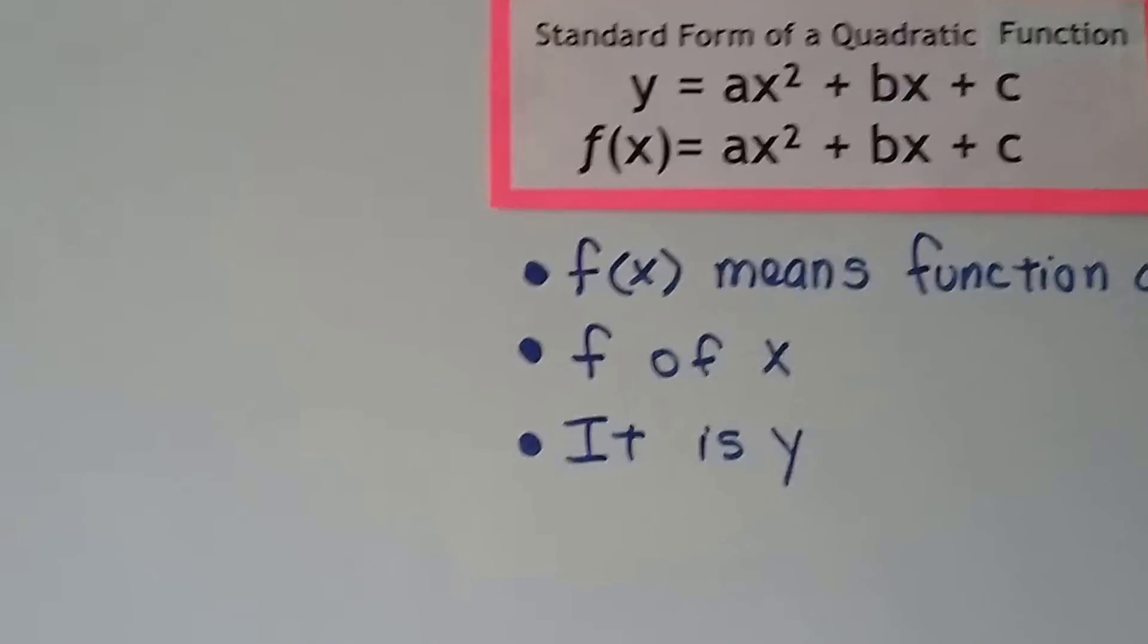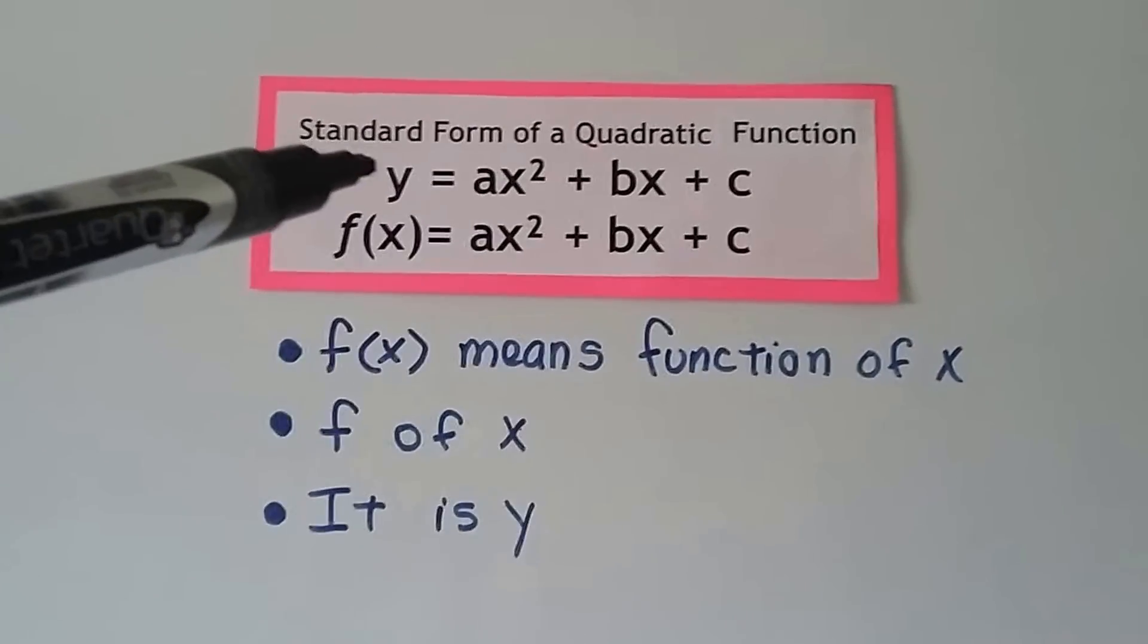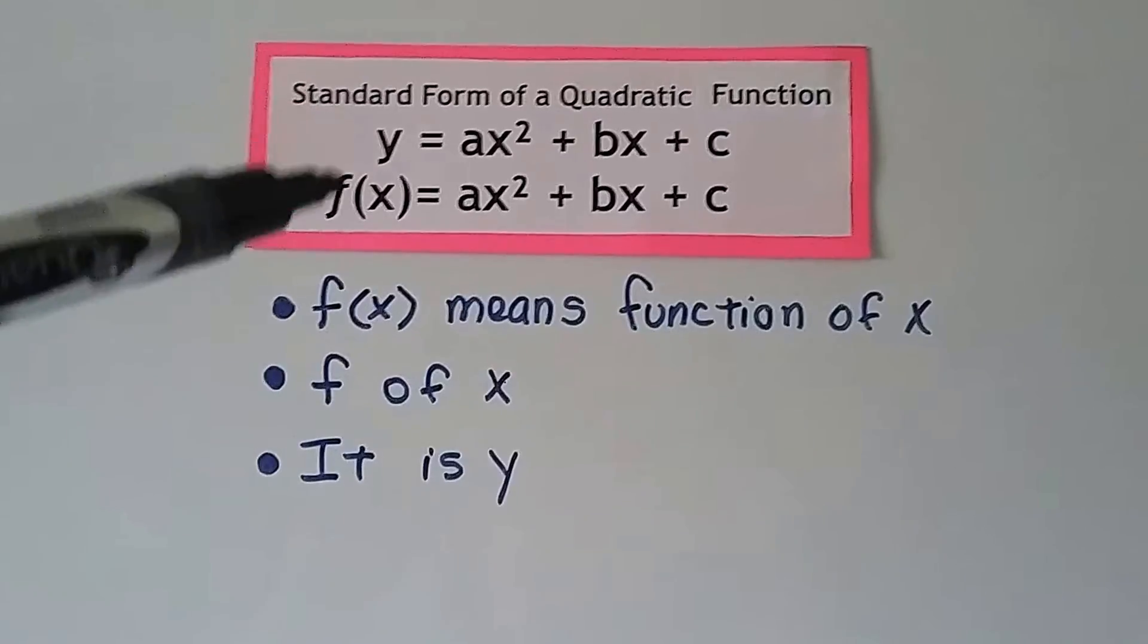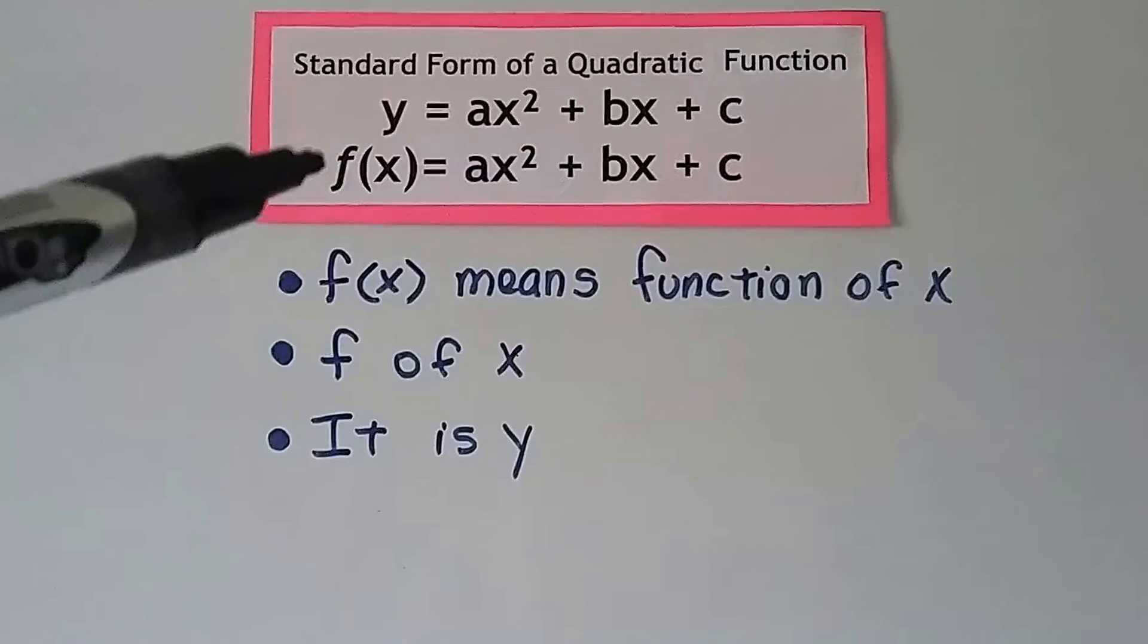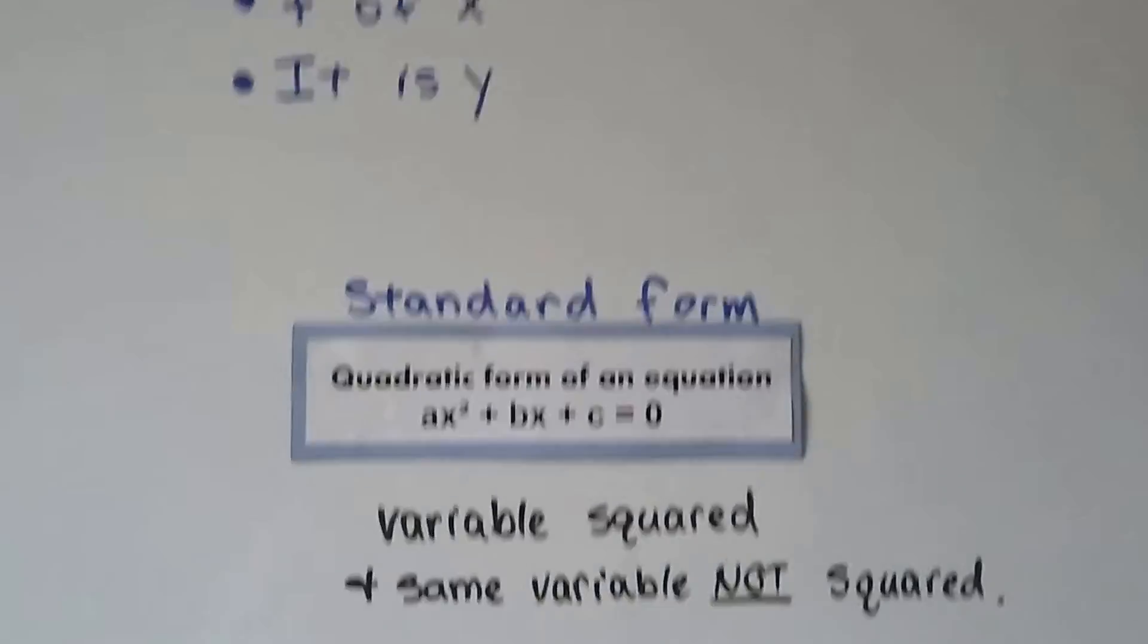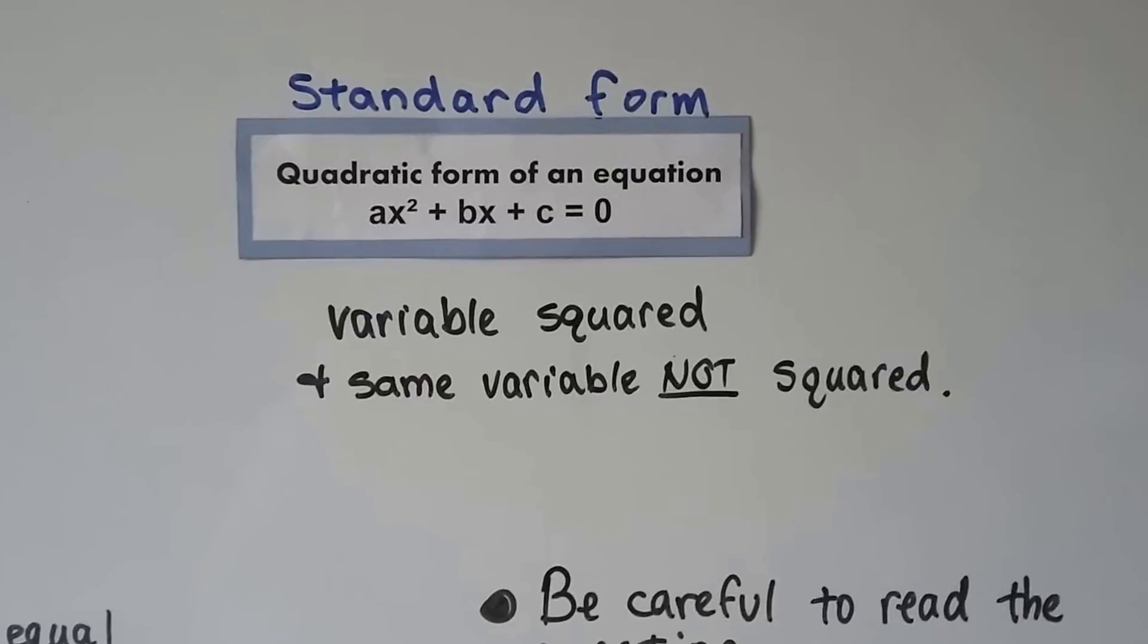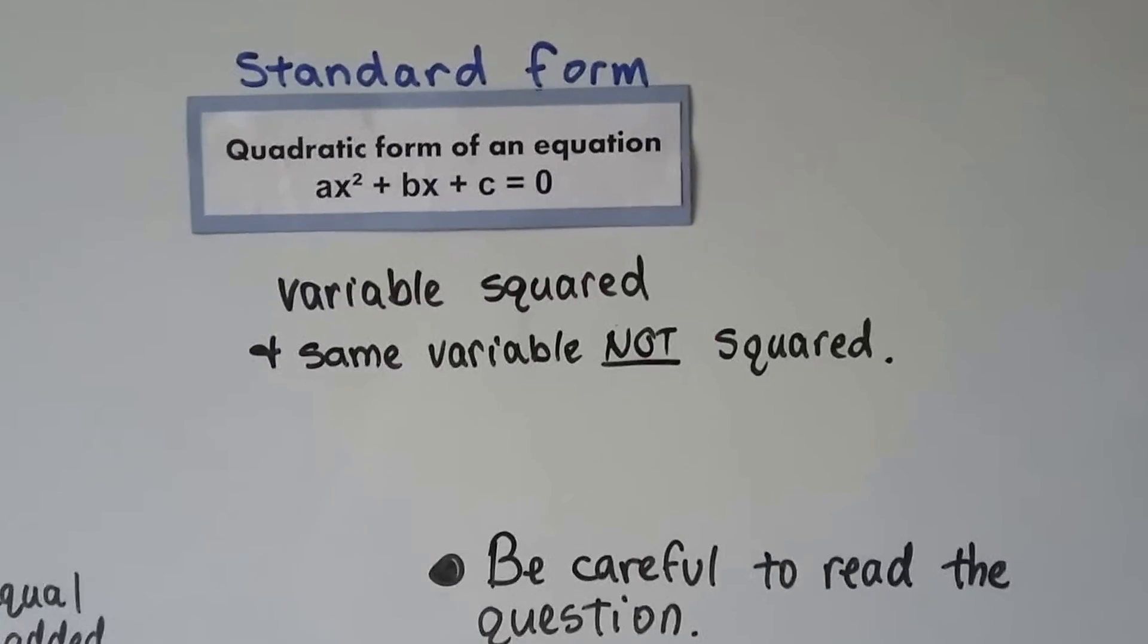So, quadratic functions can be written like this. They won't be set to equal 0. That's an equation. A quadratic function is going to equal a y, or it'll equal f of x. And this f of x, that's how you read it, means the function of x. We talked a little bit about functions before. It's actually the y value. And in standard form, it equals a 0. It's got a variable squared plus the same variable that's not squared. That's a quadratic form of an equation. It's in standard form.